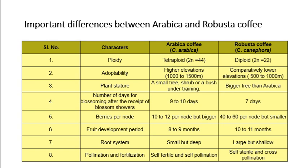The number of days for blossoming after receipt of blossom shower: arabica requires 9 to 10 days and robusta requires 7 days. Berries per node: arabica has 10 to 12 per node but they are bigger, while robusta has 40 to 60 per node but smaller. Fruit development period: arabica requires 8 to 9 months and robusta requires 10 to 11 months. Root system: arabica has a small but deep root system, and robusta has a large but shallow root system.